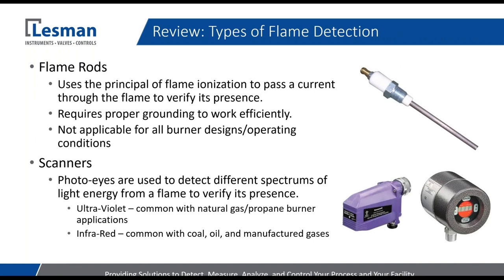We'll do a little bit of a review, going through the common types of flame detection first, because they will have different types of issues and things we'd need to look for to identify why your burner would shut down. The first very common type is a flame rod, which uses the principle of flame ionization to pass current through the flame to verify the presence of flame. The flame safeguard sends out a high voltage signal around 200 volts through the flame rod, and when the flame is present, the current goes through the flame to a burner ground. This requires proper grounding — you've got to make sure you have that current path from the flame safeguard through to the ground.